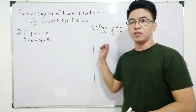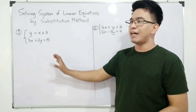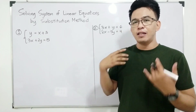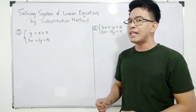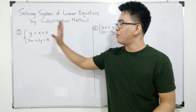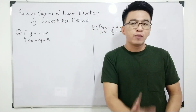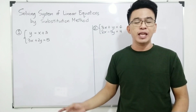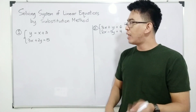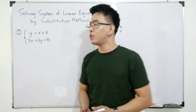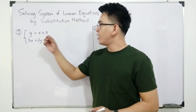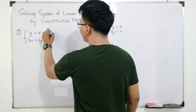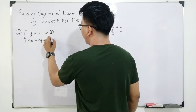We have here two different examples in which we will solve the systems using the substitution method. When we say solving systems of linear equations, our target is to find the values of variables x and y that will satisfy both equations involved in the given system. Let's try item number one: y = x + 3, and 3x + 2y = 15. This is equation number one, and this is equation number two.